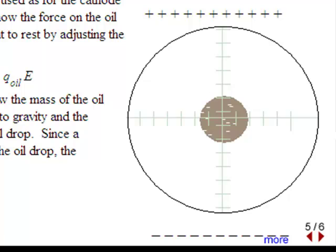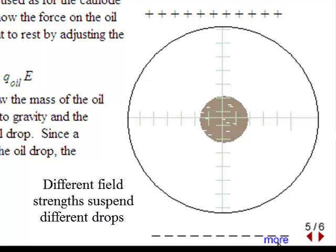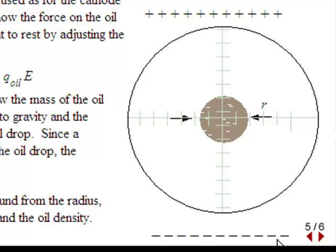The oil drop is charged with n electrons of unknown charge. Some oil drops have many electrons and others have only a few. Differently charged oil drops require different field strengths to bring them to rest. By choosing many different oil drops, recording their diameter to calculate their mass, and applying different stopping electric fields, Millikan could plot the charges on oil drops as a function of the electric field required to stop them. By extrapolating the values he arrived at the smallest charge requiring the smallest stopping field, from which the charge of a single electron was obtained.